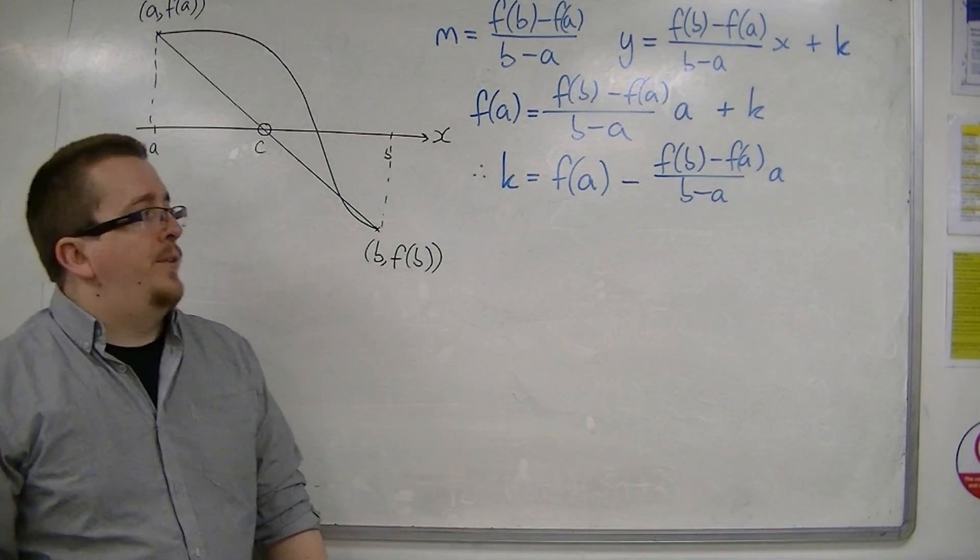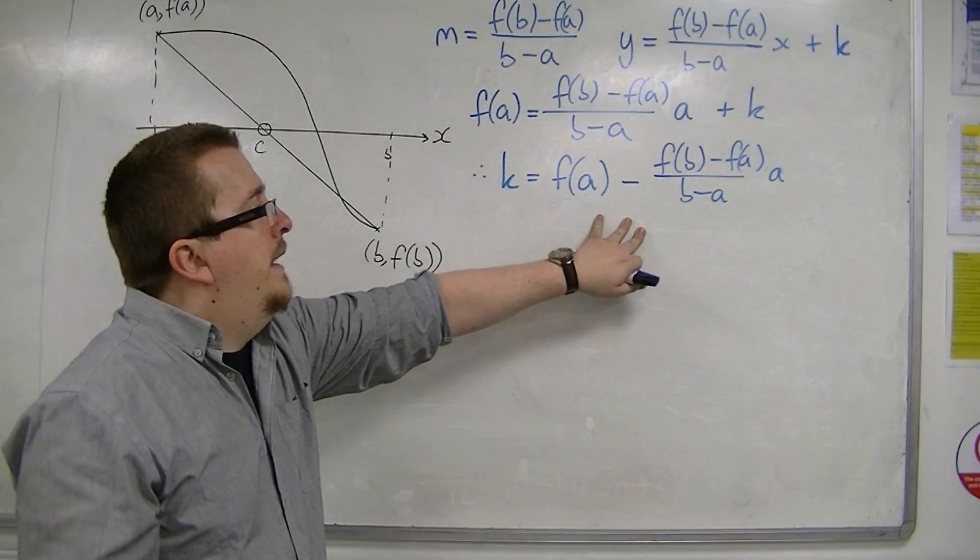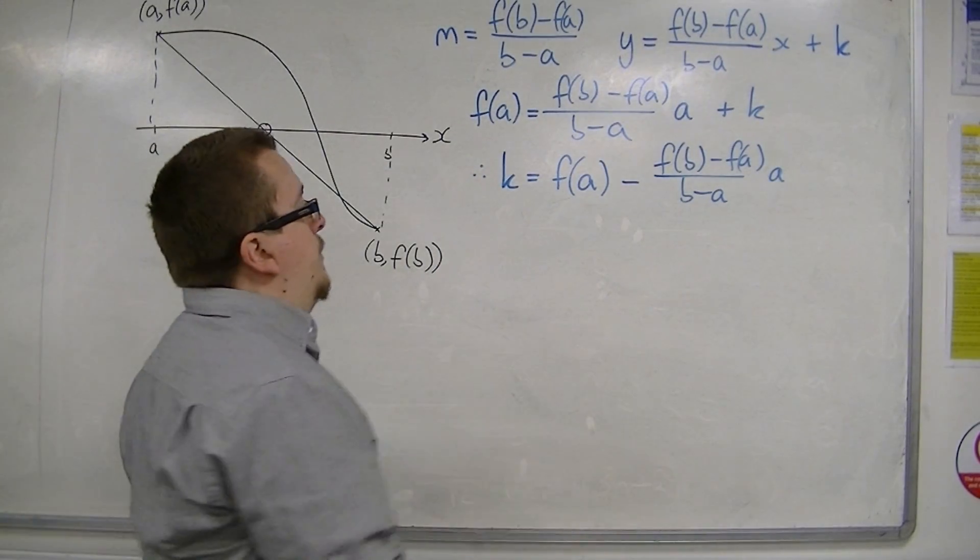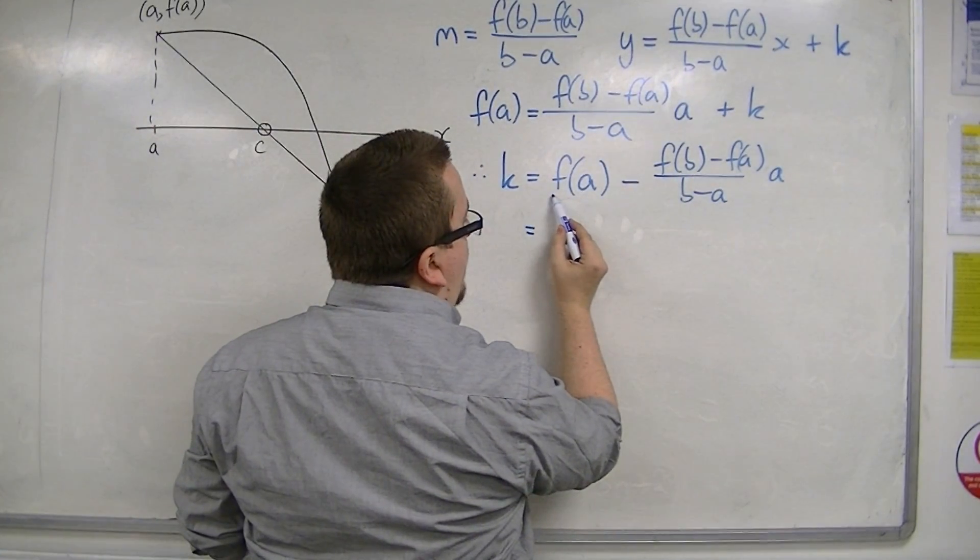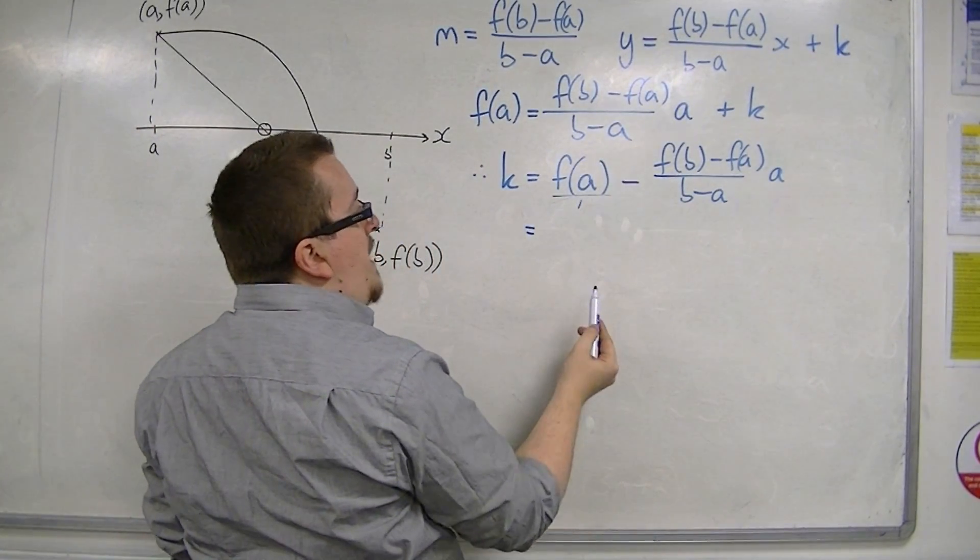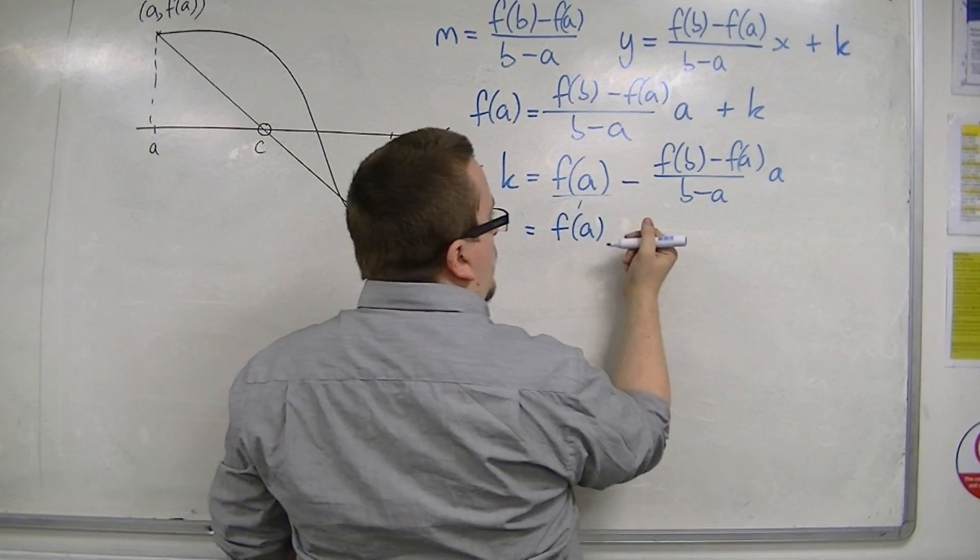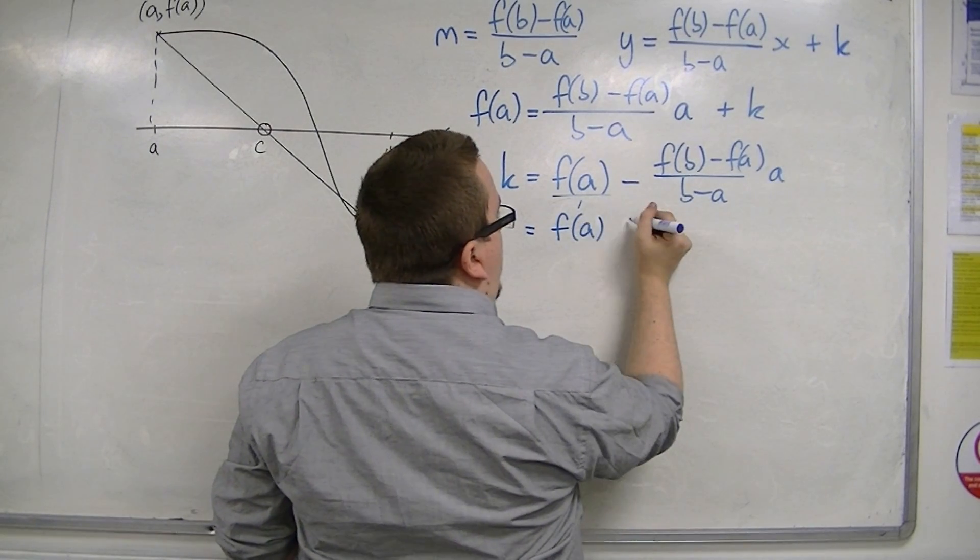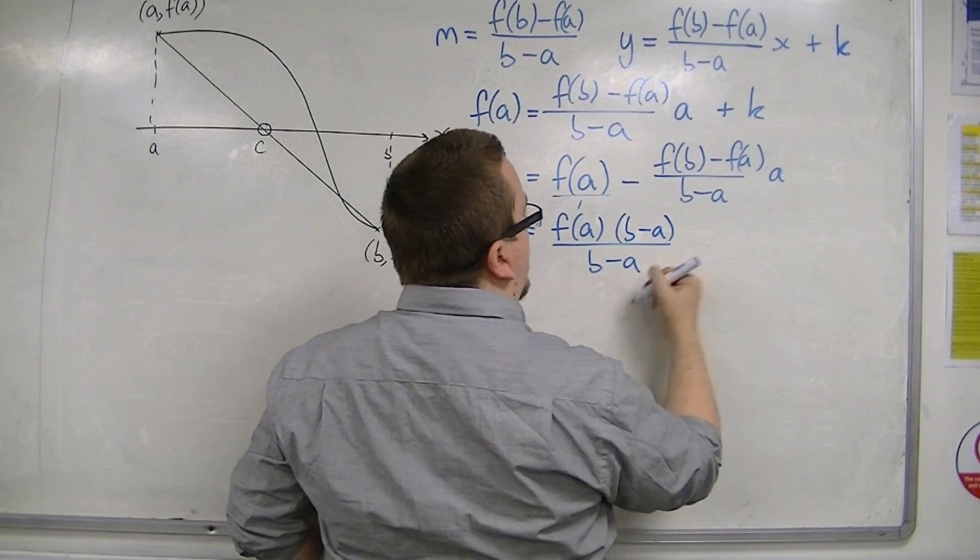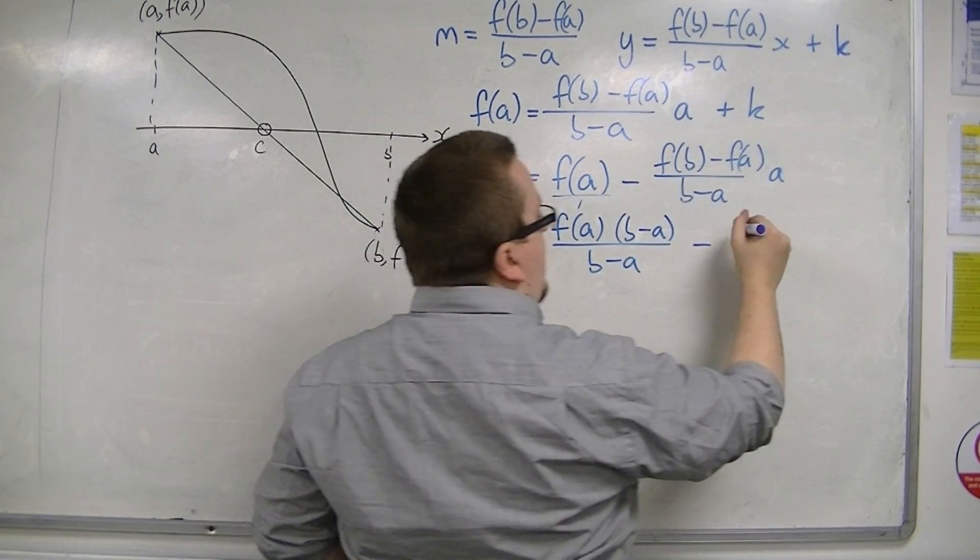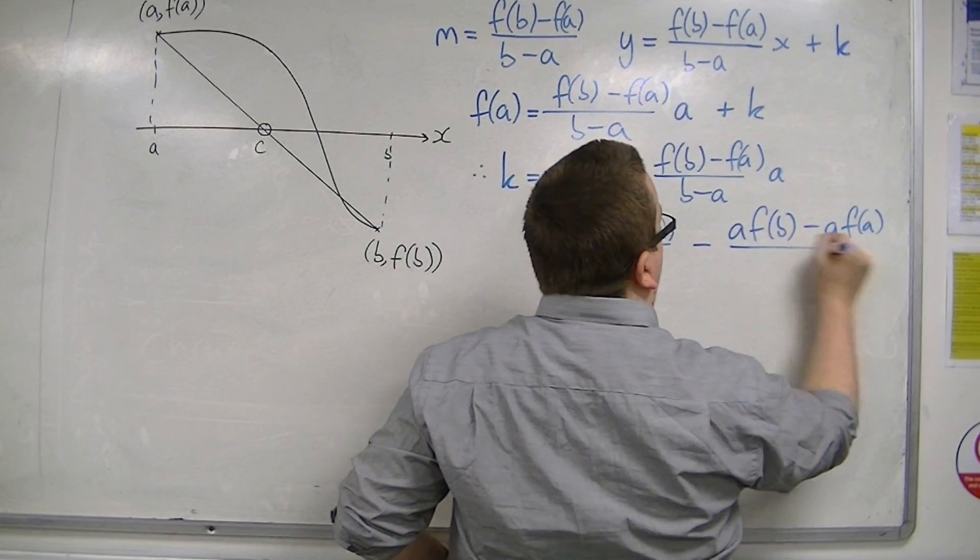So, at the moment, this looks absolutely horrific. I want to be able to write this in a nicer way. So, what I'm going to do is I'm going to multiply this, this is f(a) over 1, top and bottom by b minus a. That way, I can get them both over the same common denominator. So, I'm going to have [f(a) times (b - a)]/(b - a). Take away, and I'm going to multiply through by the a. So, [a·f(b) - a·f(a)]/(b - a).